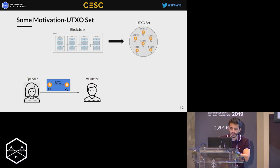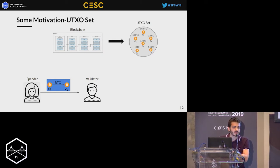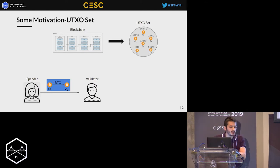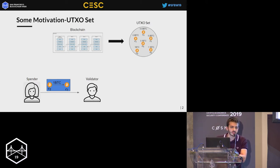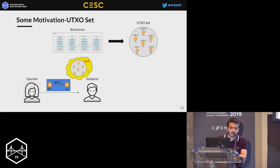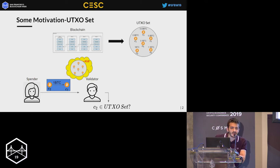Say that we have a transaction, meaning we have a spender that wants to spend a coin and a validator that wants to verify the transaction. The least of the things that this validator should do is check that this coin has never been spent in the past. For this, he uses the blockchain to derive the UTXO set — the set of all unspent coins — and then at the time of the transaction, he checks that this coin is indeed part of the UTXO set.